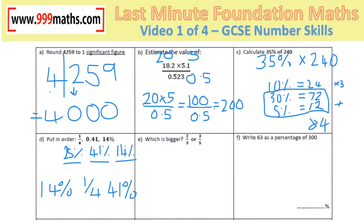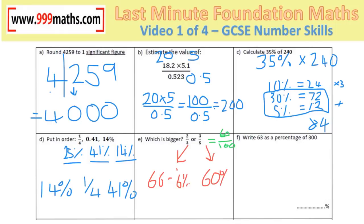Which of the numbers is bigger? Two thirds is 66.6 recurring percent — if you don't know that, learn it. We put a dot on the six after the decimal point to show it's recurring. Three fifths: if you don't know the percentage, convert it by making the denominator 100 — times the bottom by 20, so times the top by 20. Three fifths equals 60%. Comparing both as percentages, two thirds is clearly the biggest.